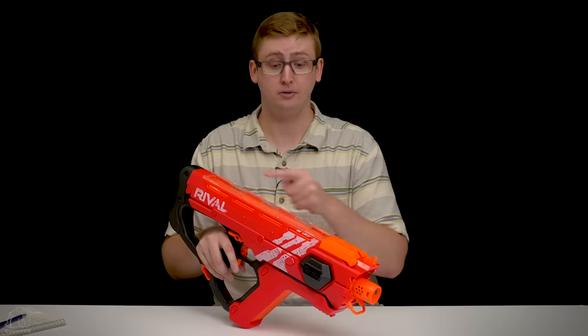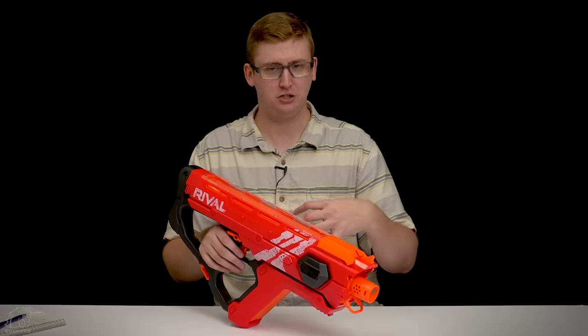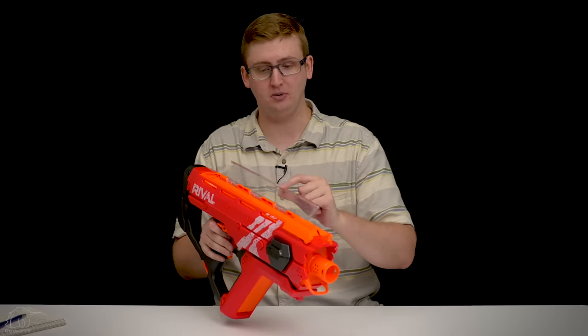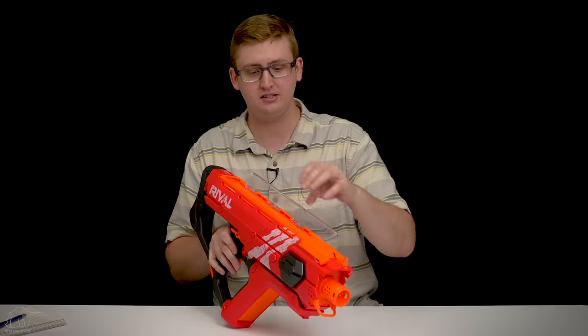Behind that is the hopper and the hopper door. The Perces holds 50 Rival rounds. This hopper is a little unique and, in my opinion, kind of frustrating to use. But to open it, you can just pull up, and this entire piece of clear plastic opens up. It doesn't have a small hopper door. The entire thing is exposed, which makes it easy to load.